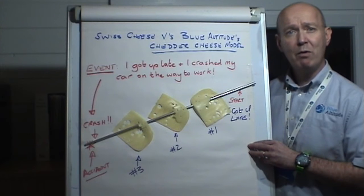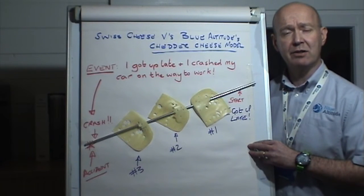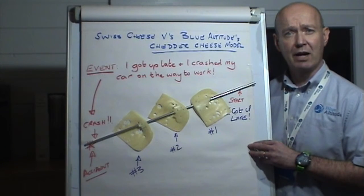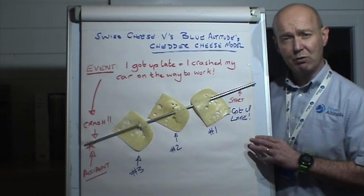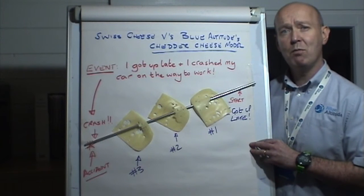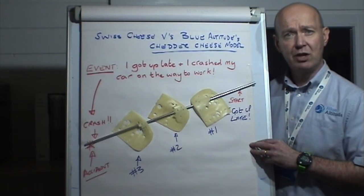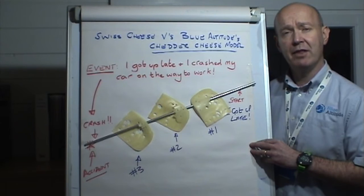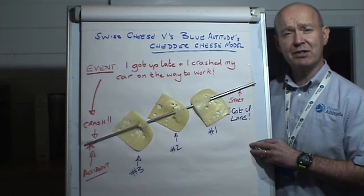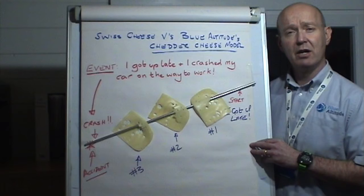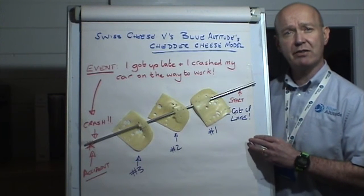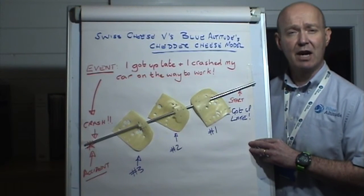When we're involved in an incident or an accident, or when we investigate those events that may happen, one model that we may use to help understand and learn from those events is the Swiss cheese model. That really is a means to understand the sequence of events and the contributing factors that caused the actual event to happen.